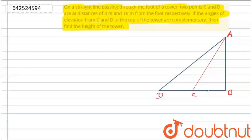These two points are having a distance of 4 meters for C and the distance from point B to D is 16 meters.